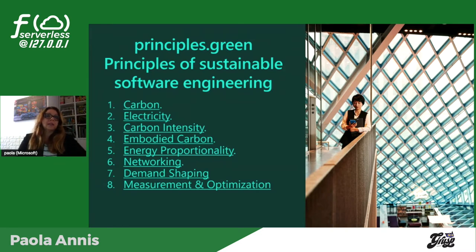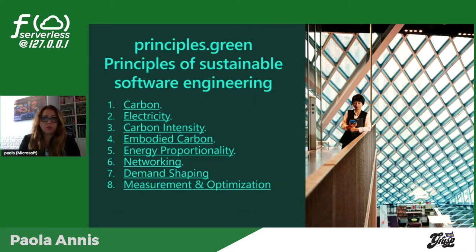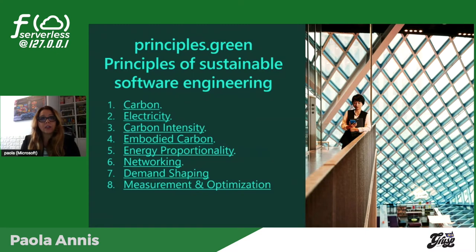Il secondo principio parla di efficientamento energetico. La maggior parte dell'elettricità che usiamo è prodotta da fonti fossili ed è responsabile di circa la metà del CO2 emesso in atmosfera. Si parla in gergo di carbon equivalent o carbon intensity: carbon non inteso solo come CO2, ma tutto quello che contribuisce all'inquinamento. Tutti i software consumano elettricità per la loro esecuzione, compresi quelli che girano nei data center cloud. Un'applicazione ecosostenibile deve farsi carico dell'elettricità che consuma ed essere architettata per consumarne il meno possibile.